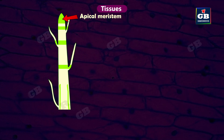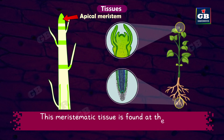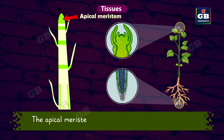Apical meristem: This meristematic tissue is found at the tips of stems and roots. The apical meristem helps stems and roots grow longer.